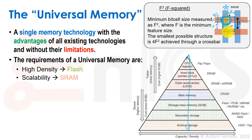Scalability: we want something that can continue to scale along with Moore's law and newer process nodes. SRAM is what we basically build our process nodes for, so we want memory that scales along with our logic, similar to how SRAM does. We also want unlimited retention — something that holds data forever. It should be non-volatile, similar to flash or a hard disk, keeping data even when power is removed, unlike DRAM or SRAM which lose data.